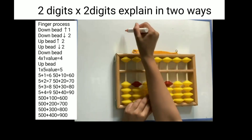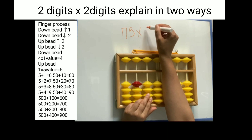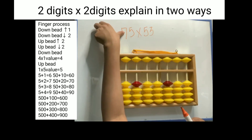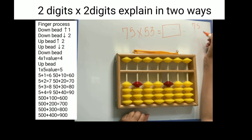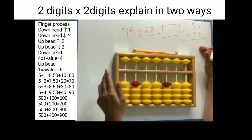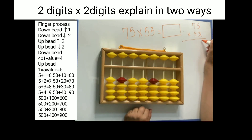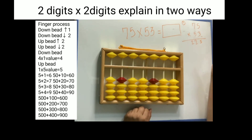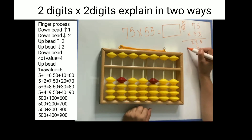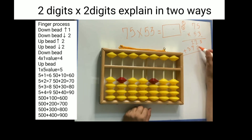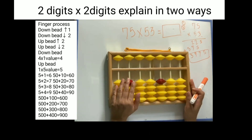Here is our question: 75 multiplied by 53. Let's do this in normal style first. Three fives are 15; three sevens are 21, carry the 2, making 22. Five fives are 25; five sevens are 35 plus 2 is 37. Your answer is 3, 9, 7, 5 — that is 3975. Now let's do the same question on the abacus.